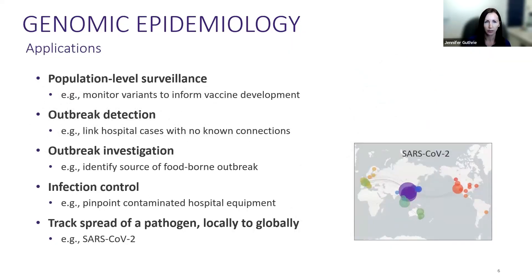There are a number of applications of genomic epidemiology. We use it for population-level surveillance to monitor variants and inform vaccine development, outbreak detection where genomics can help link hospital cases or identify a foodborne outbreak source, infection control to identify contaminated hospital equipment causing infection, and tracking the spread of a pathogen locally to globally — as we saw with SARS-CoV-2.